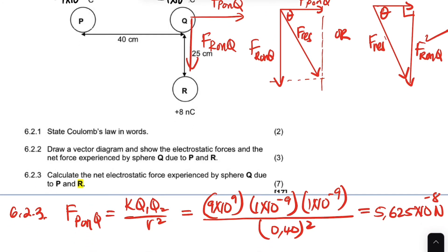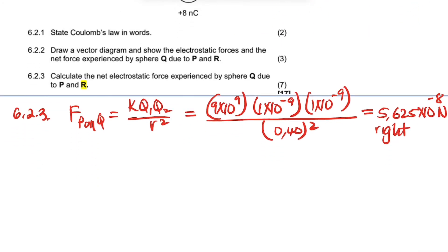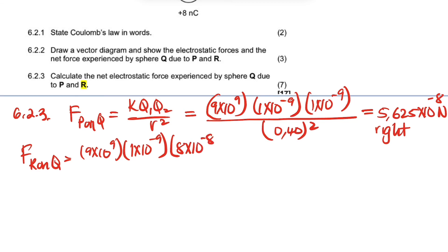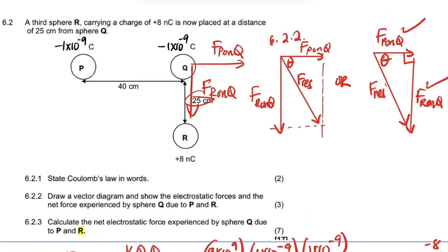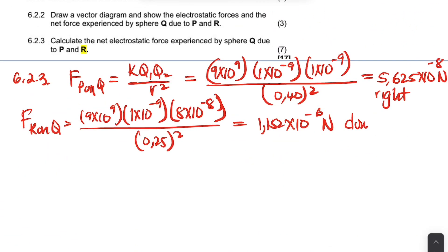Now calculating the force of R on Q: k is 9 times ten to the power 9, Q (sphere Q) is one times ten to the power negative nine, and R's charge is 8 times ten to the power negative nine. The distance between R and Q is 25 cm, converted to 0.25 m squared. The answer is 1.152 times ten to the power negative six newtons, directed downward.